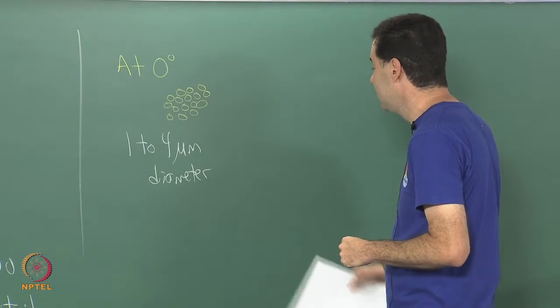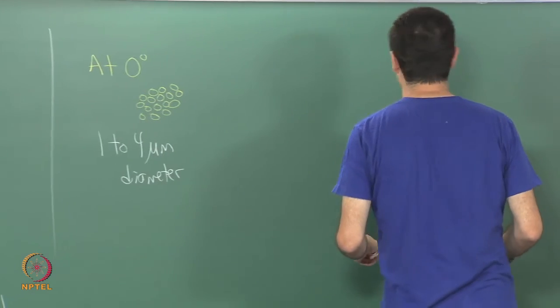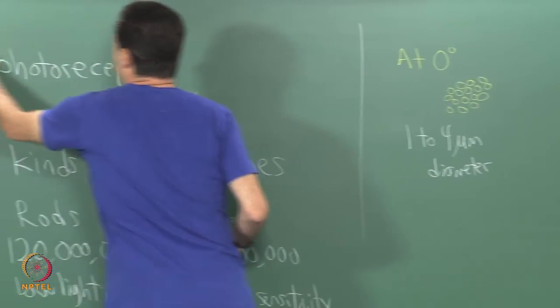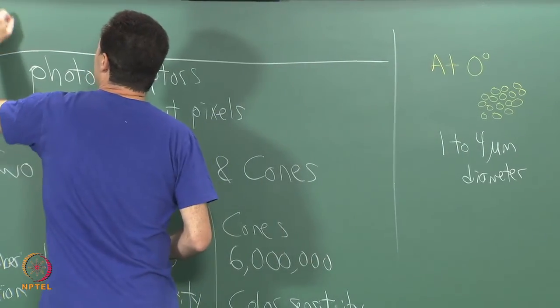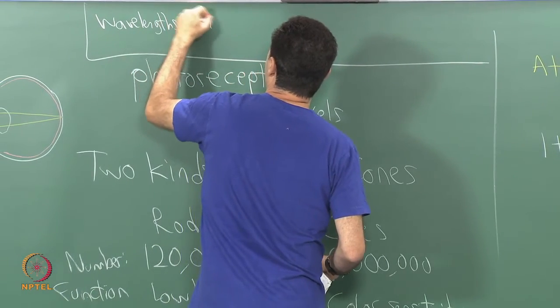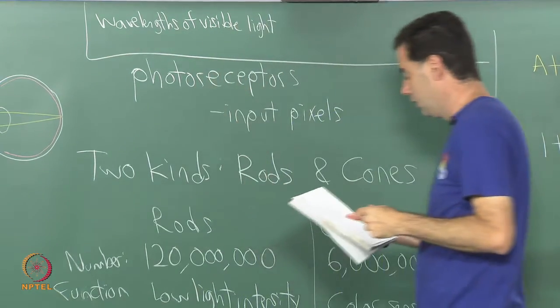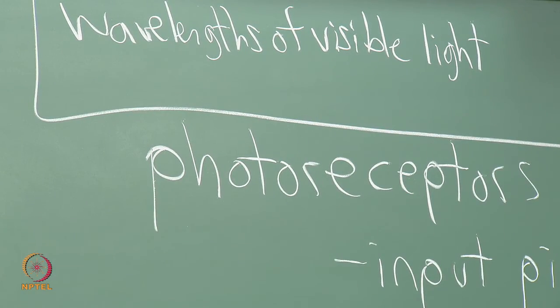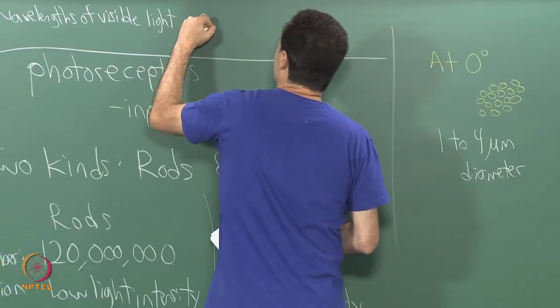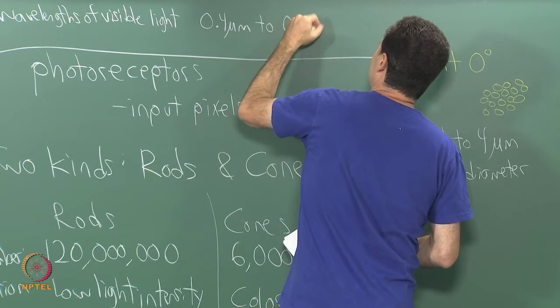What I think is interesting about that is that if we think about wavelengths of visible light, what did I say it is? Between 400 and 700 nanometers last time. Let us convert it to micrometers. So it is 0.4 micrometers to 0.7 micrometers.